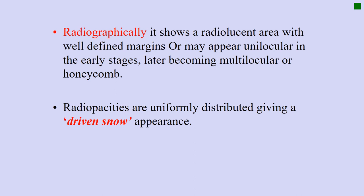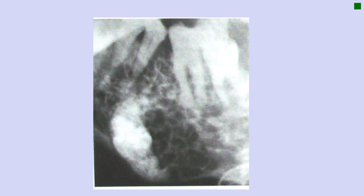Radiographically, CEOT shows a radiolucent lesion with a well-defined margin, or it may appear unilocular in early stages and later become multilocular with a honeycomb pattern. Radio-opacities are uniformly distributed giving a driven snow appearance - described as when a snowmobile drives through snow parting it on either side. Initially the lesion is radiolucent and as it matures it shows radio-opacities, making it a mixed lesion.